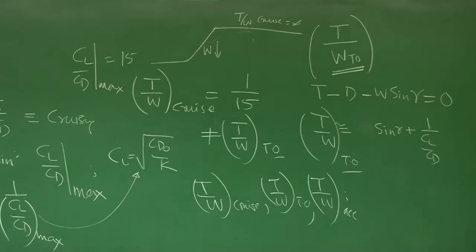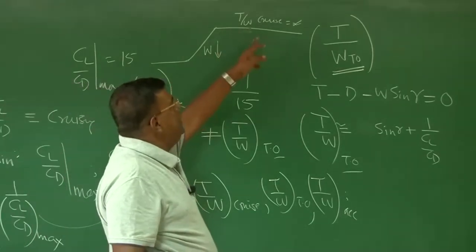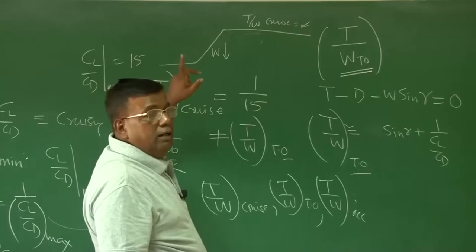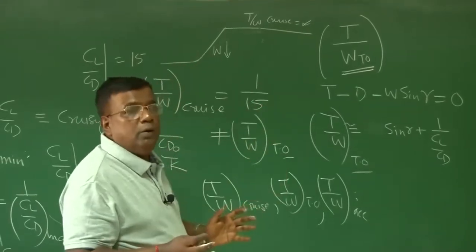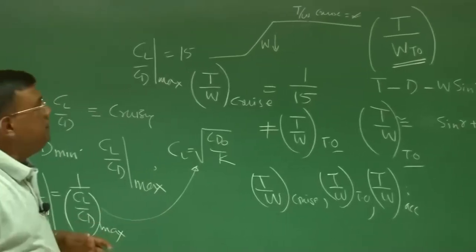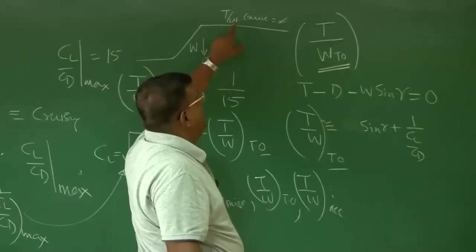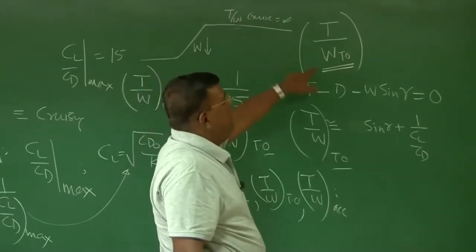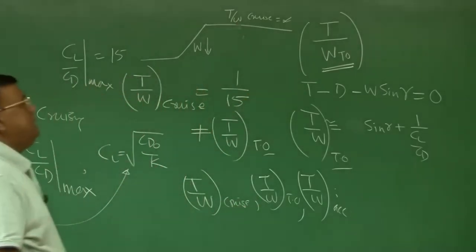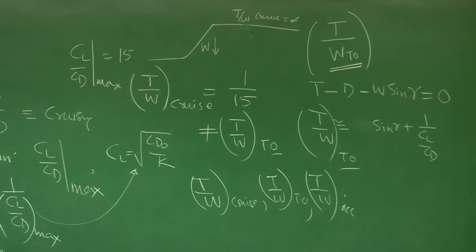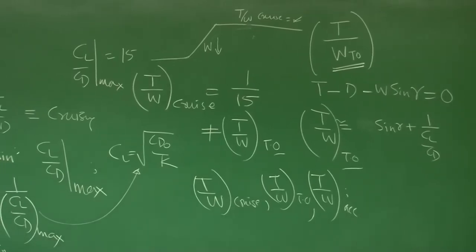So a better approach is: if we know how much fuel is consumed, then modify the weight accordingly — that is, increase this weight back. We always talk in terms of T/W at takeoff. Every such ratio involving weight must be converted back to W_takeoff; that should be kept in your mind. The reason is simple: if I say T/W cruise is some number, that W is not W_takeoff. But as a designer, I want to know what W_takeoff is required — that is where I start.